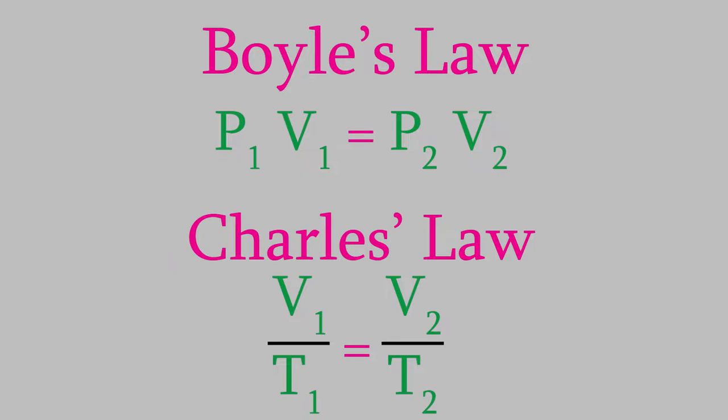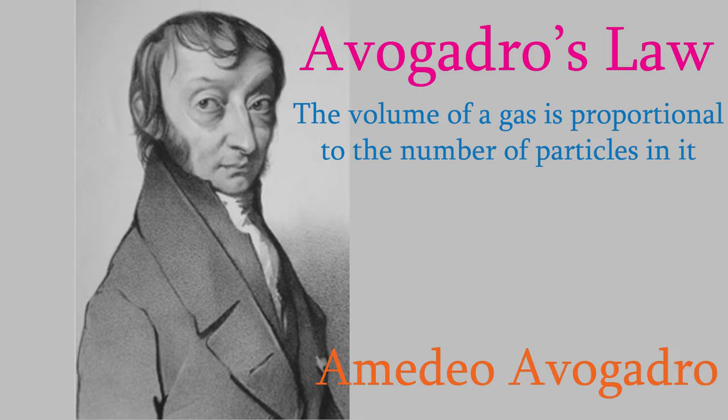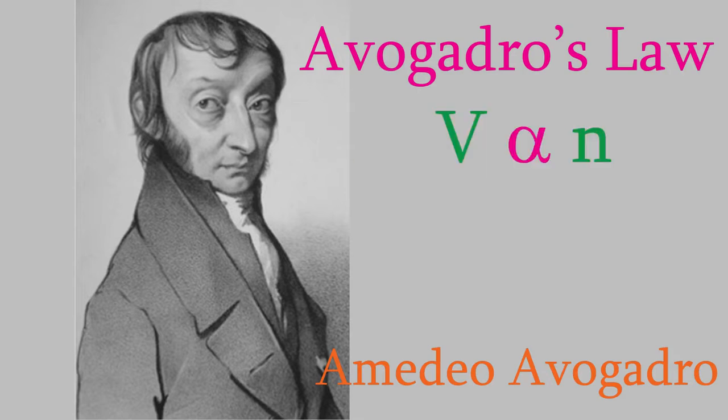In 1811, the Italian physicist Amadeo Avogadro, the same guy that Avogadro's number is named for, realized something interesting about the volume of a gas and the number of molecules in it. First, he realized that the volume of a gas is proportional to the number of particles. That's called Avogadro's Law, and we can write it this way. This symbol means proportional to. And the N here is the number of atoms or molecules in the gas. Usually, we measure that in moles.